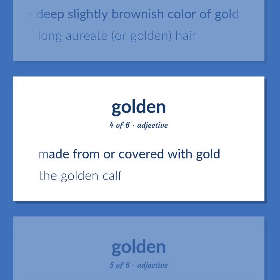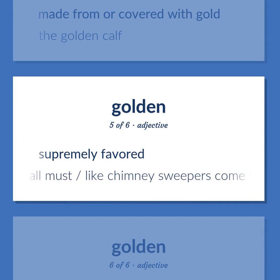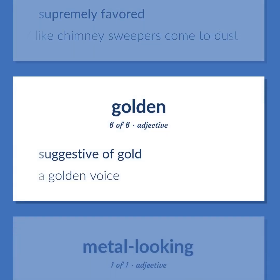Golden (sense 4): made from or covered with gold — the golden calf. Golden (sense 5): supremely favored — 'golden lads and girls all must, like chimney sweepers, come to dust.' Golden (sense 6): suggestive of gold — a golden voice.